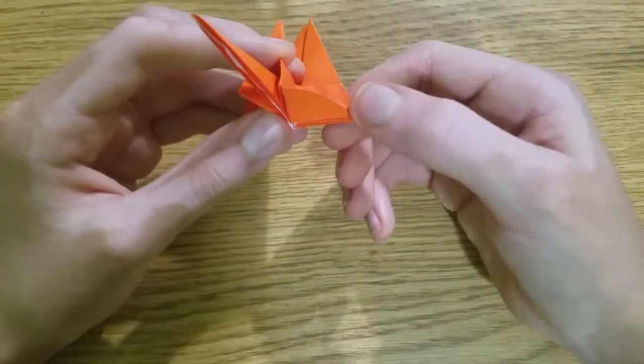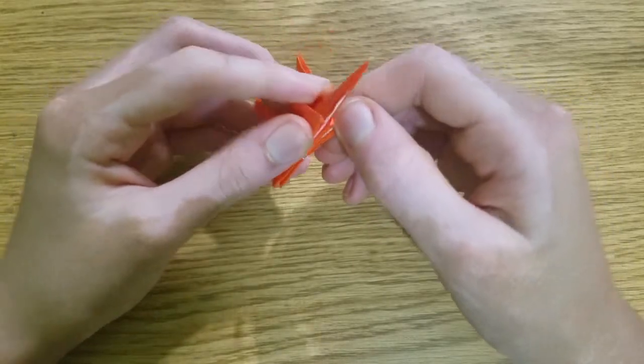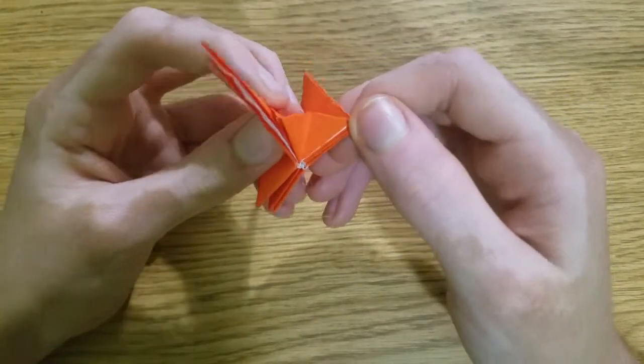Then it looks like this. Hold that in place and collapse, making that crease.